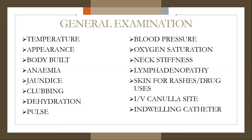In general physical examination, look for temperature, appearance, body build, anemia (may be present in malignancy), jaundice (may be present in hepatitis), clubbing, bony tenderness (may be present in leukemia), dehydration (may be present in diarrhea), pulse — there is a proportional increase in pulse for each degree rise in temperature — blood pressure, oxygen saturation, lymphadenopathy, neck stiffness, skin for rashes or signs of drug use, and indwelling catheters for infection.